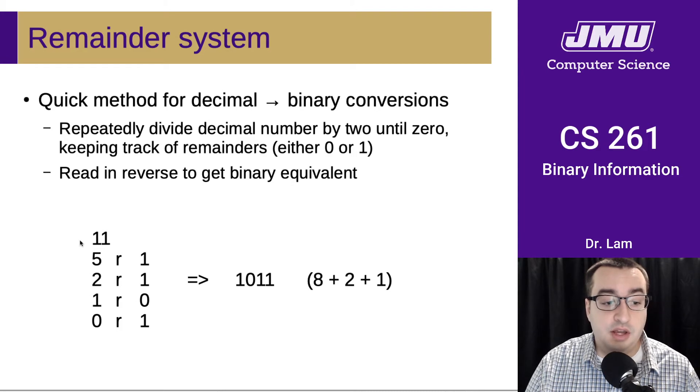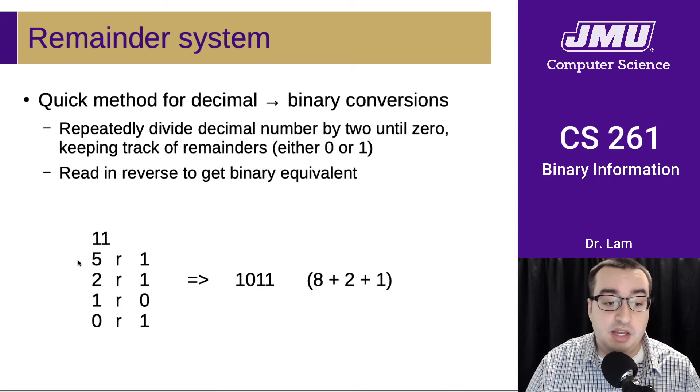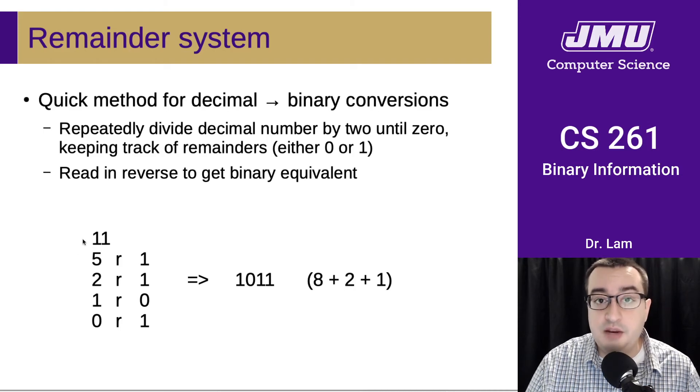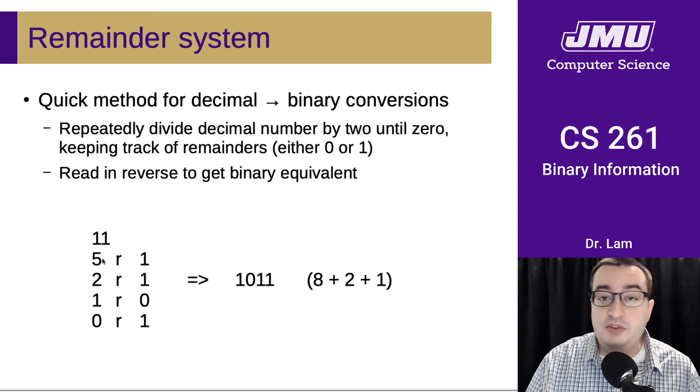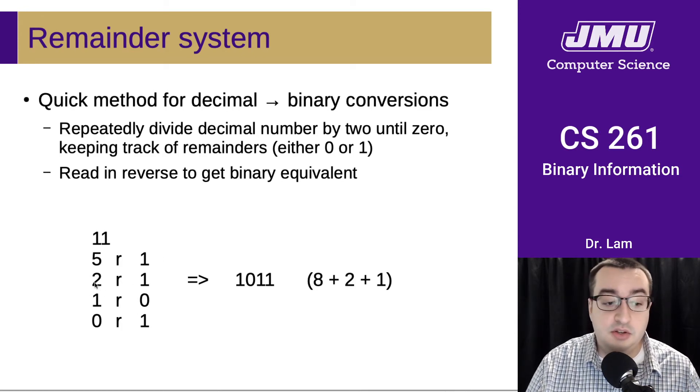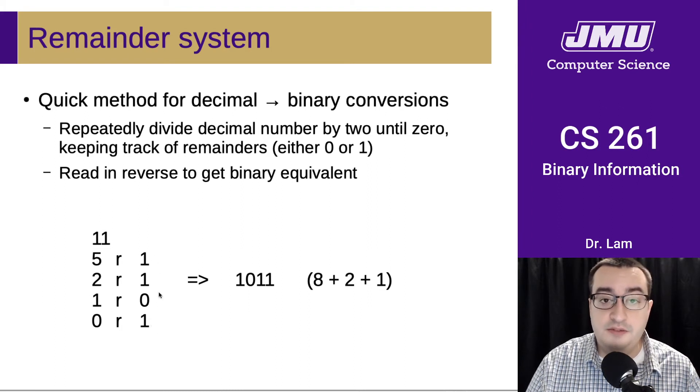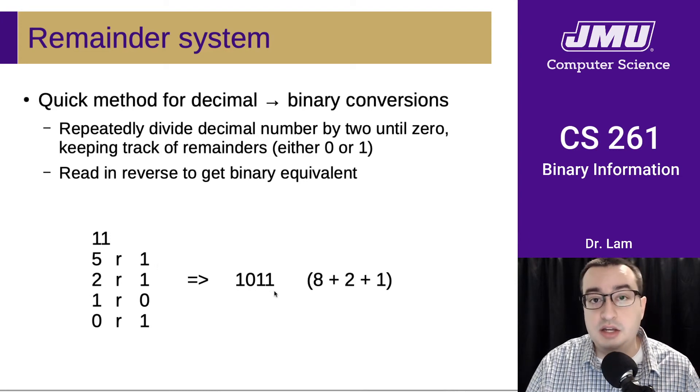For instance, converting 11 to binary: we start with 11 and divide by 2. This is an odd number, so we subtract 1 as the remainder. 10 divided by 2 is 5, so 11 divided by 2 is 5 remainder 1. 5 divided by 2 is 2 remainder 1. 2 divided by 2 is 1 remainder 0. 1 divided by 2 is 0 remainder 1. We take these bits and read them in reverse order, starting at the bottom going to the top. That is our binary equivalent.